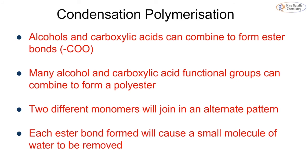We're now going to look at a different type called condensation polymerization, where we have alcohols and carboxylic acids bonding together to form ester bonds. We covered esters in the last topic, 4G, and we're going to take that same reaction and apply it to form a polymer.